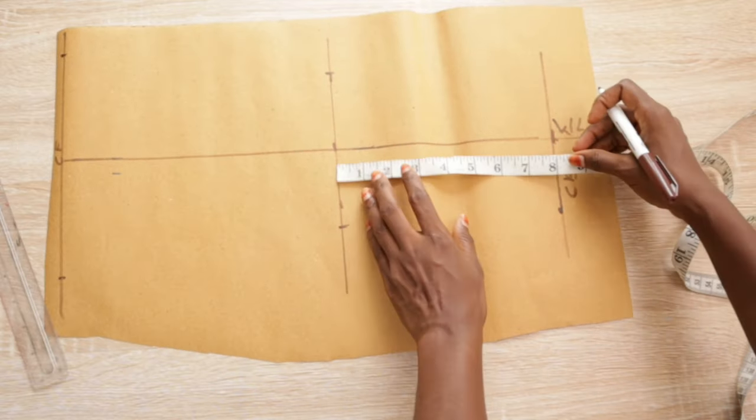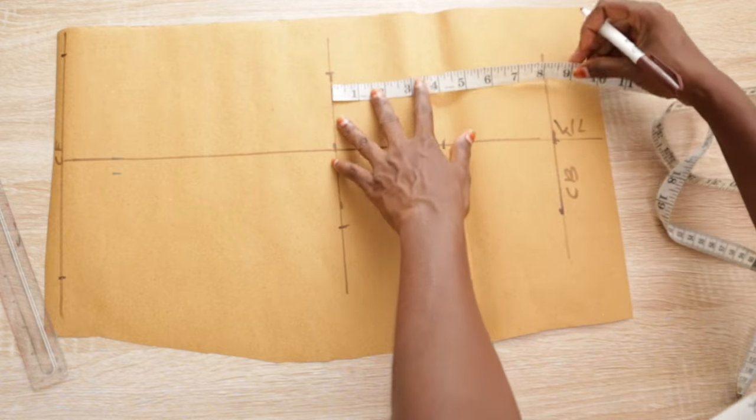And then we join the center back line. We're gonna divide the back into two. You're just dividing the panels into two and that will be it for the back mostly.